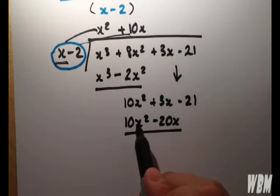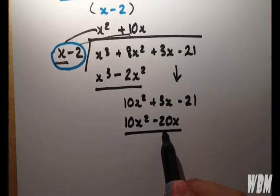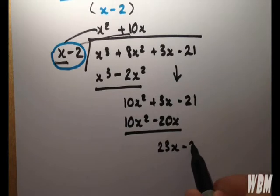So, of course, we have 0. And we have 3 minus minus 20, which is, of course, 23x minus 21.